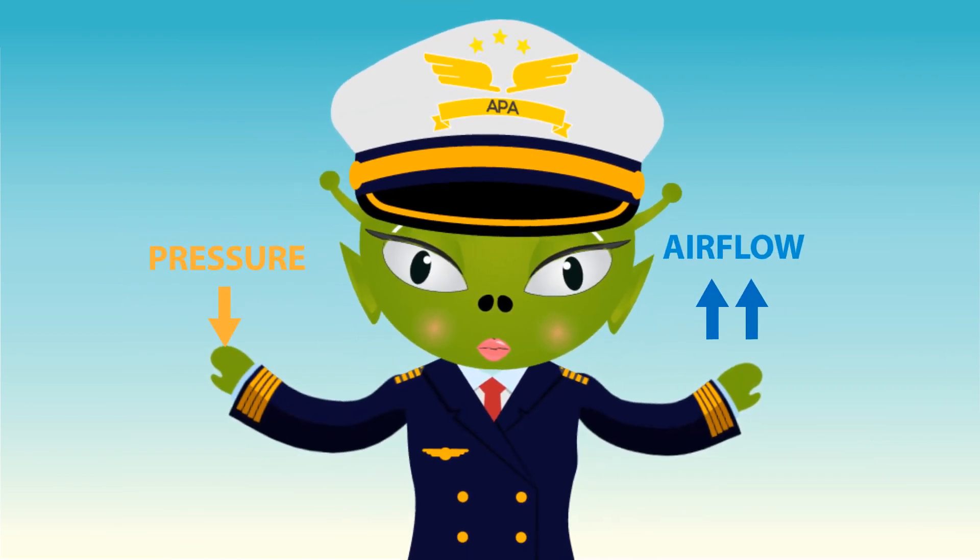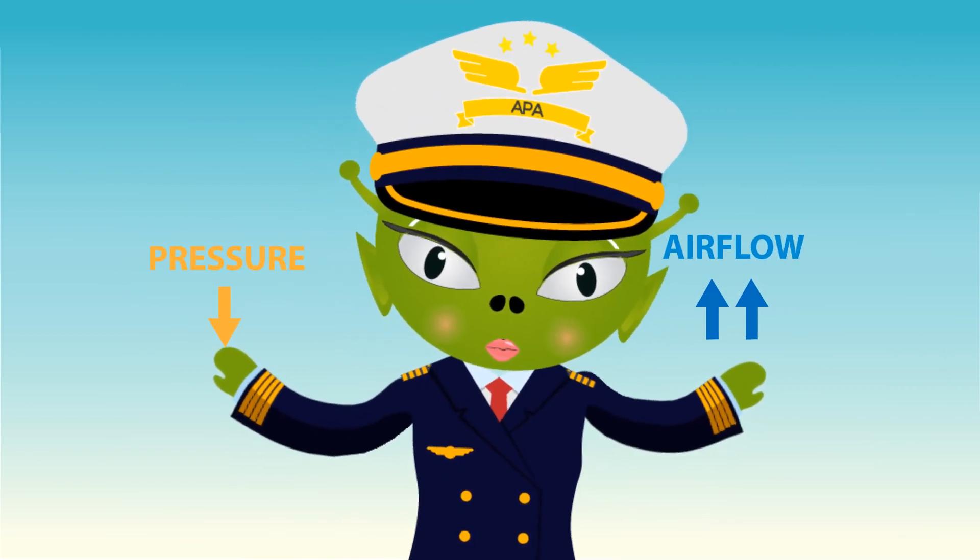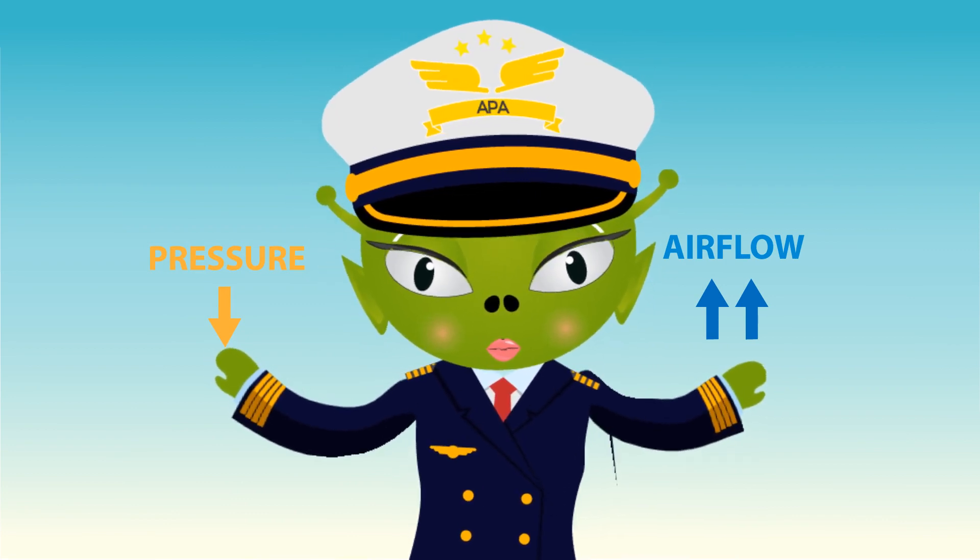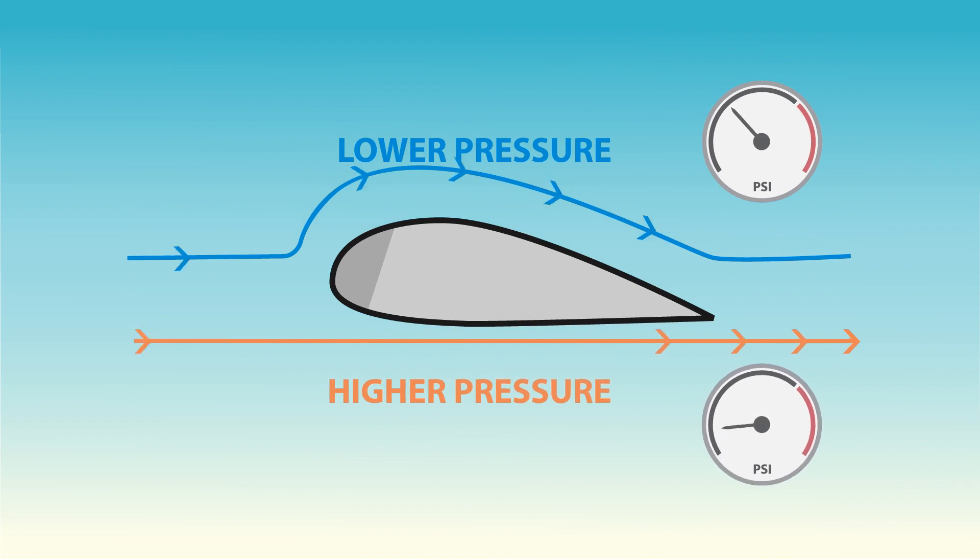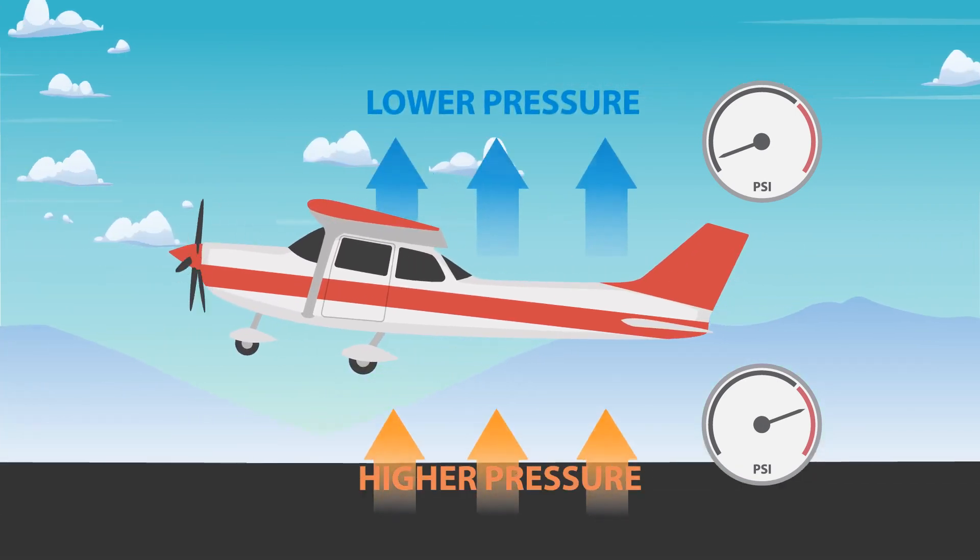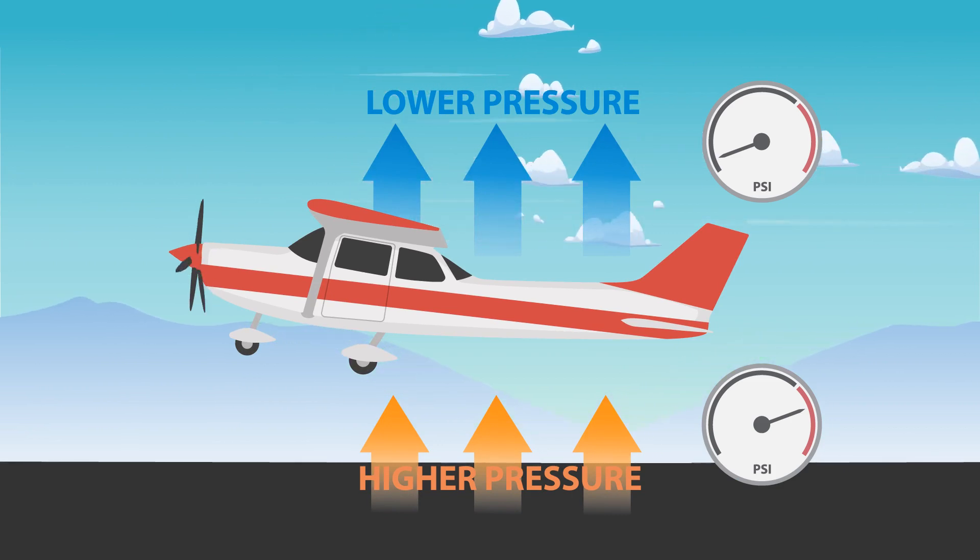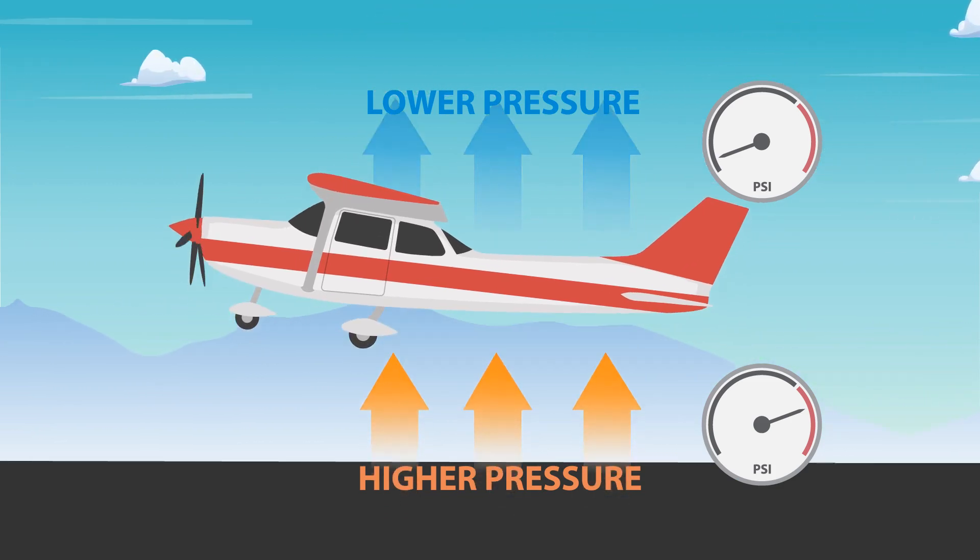This change in air velocity between the upper and lower wing surfaces results in a change in pressure. Air traveling faster along the top creates lower pressure on top of the wing compared to the relatively higher pressure created by the slower moving air along the bottom. Since the pressure is lower above the wing, the higher pressure under the wing can lift the airplane into the air.